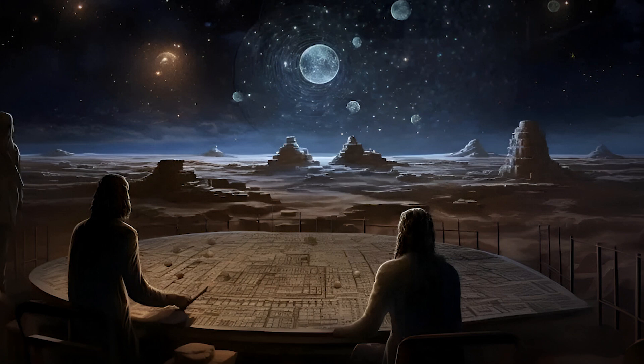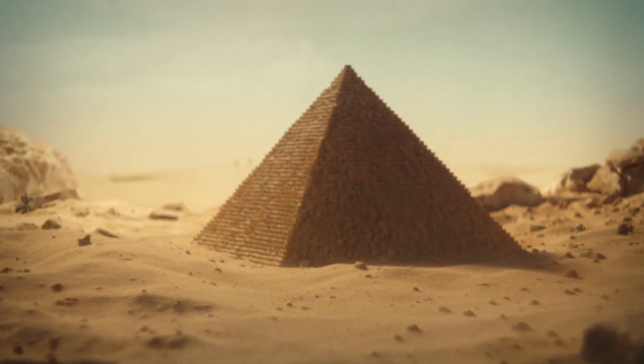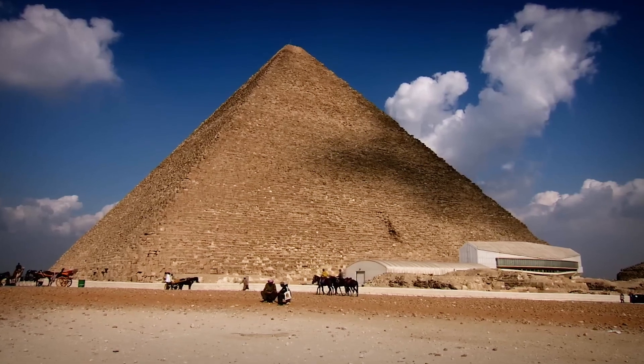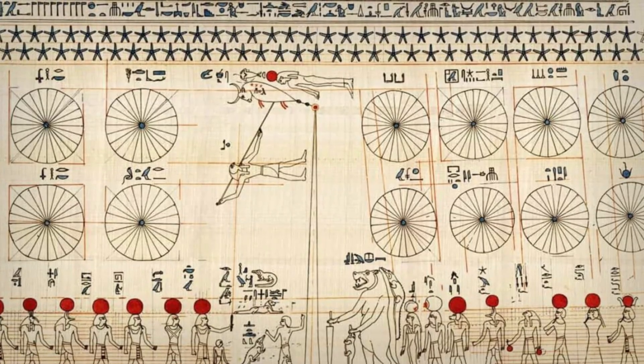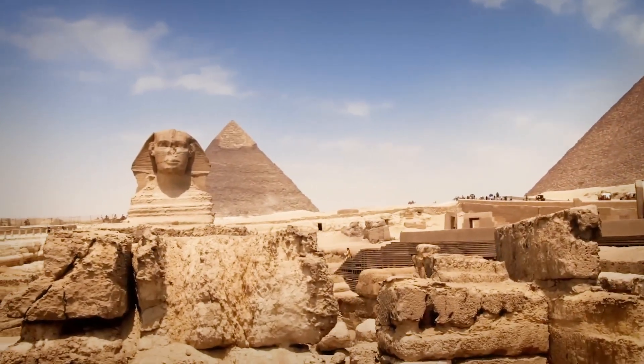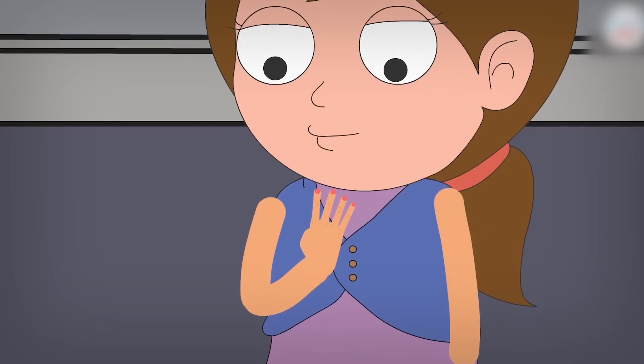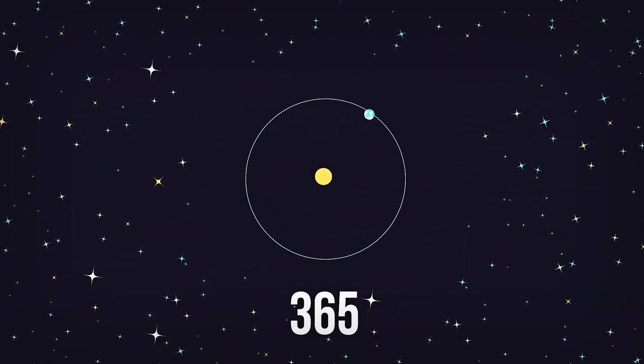The concept of a 360-degree circle didn't end with the Babylonians, it found its way to the Egyptians too. The ancient Egyptians, renowned for their architectural and astronomical prowess, also adopted a 360-day calendar. But they didn't stop there. They added five extra festive days, bringing the total to 365, closer to our modern calendar.